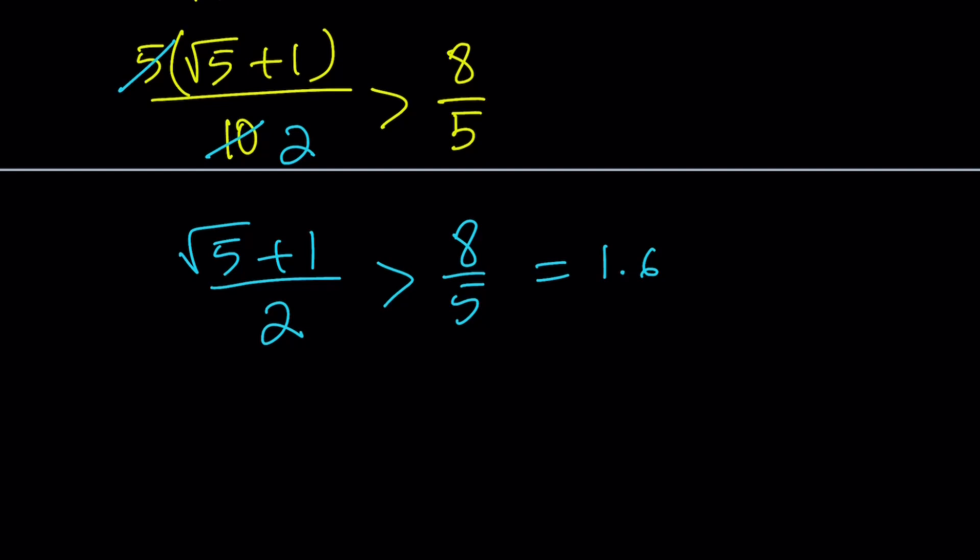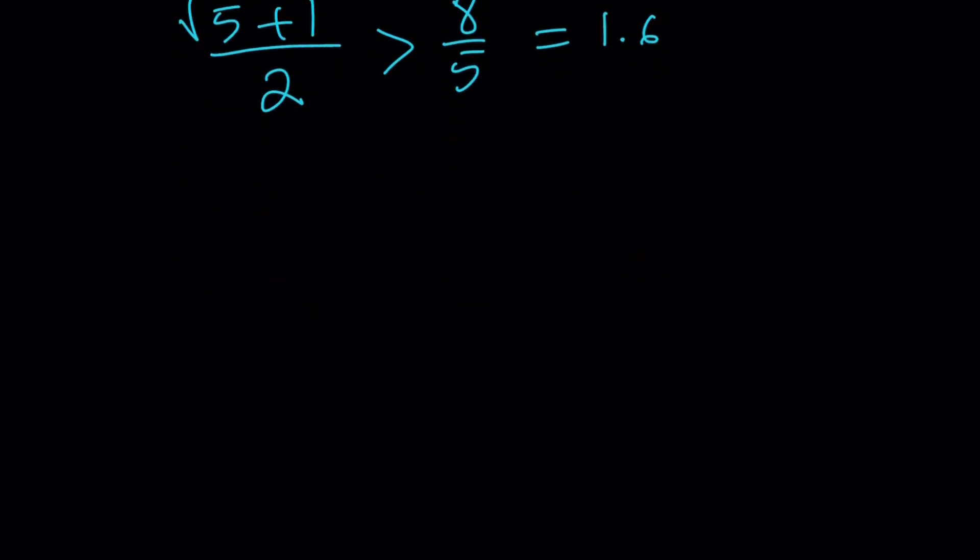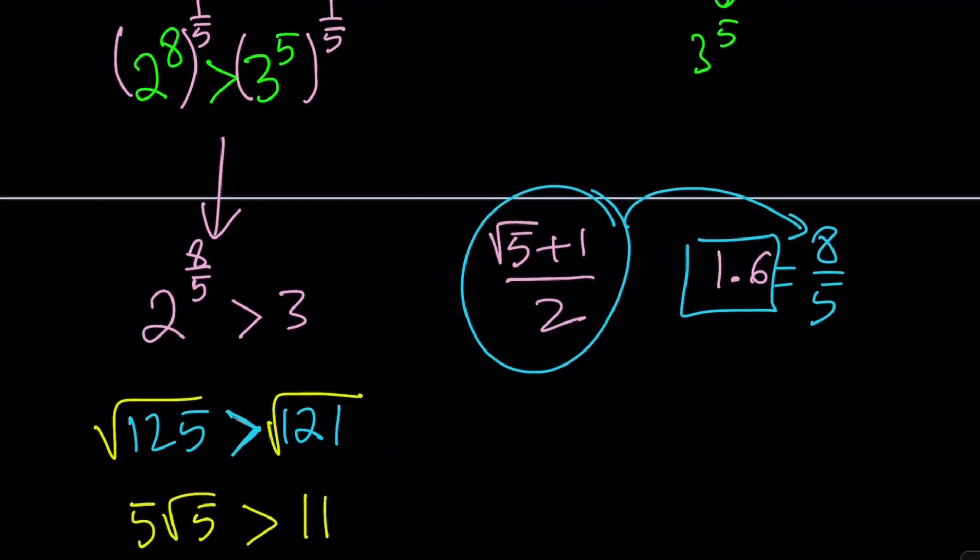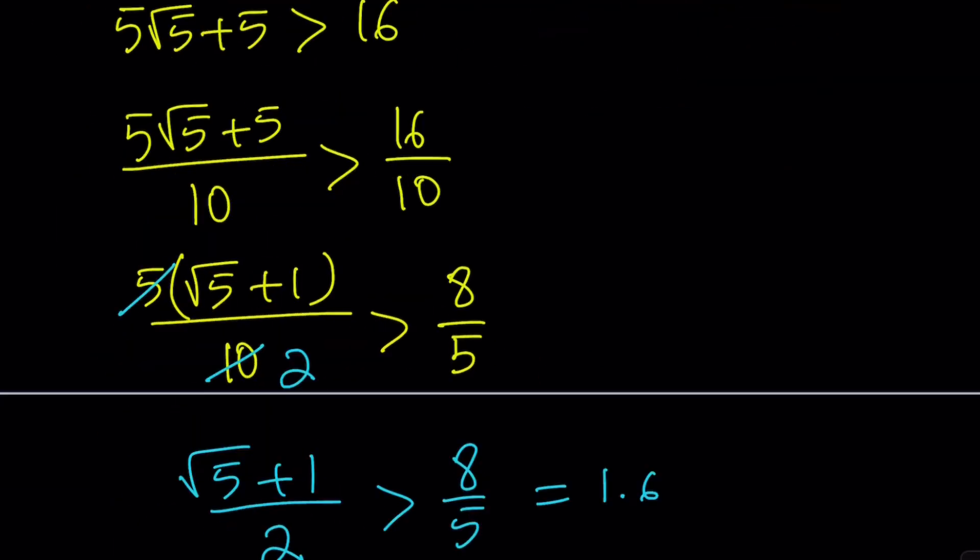How do you think I'm going to use it? Here's how we're going to use it. We're going to do 2 to the power of both sides. So it's going to look like this: 2^((√5+1)/2) > 2^(8/5). But we already knew that 2^(8/5) > 3.